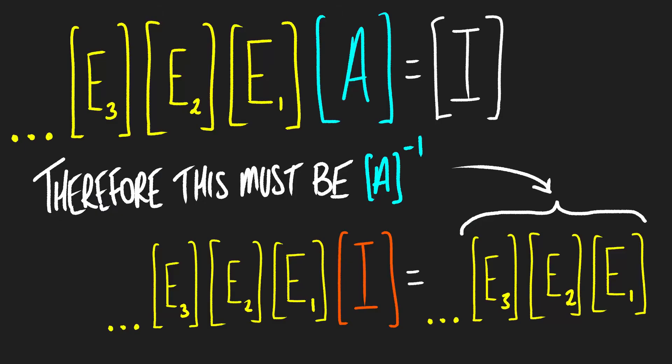The thing to notice is that all of these elementary matrices we multiplied the identity matrix by are the exact same group that we multiplied matrix A by to get the identity matrix. And that is the exact definition of what an inverse matrix is: if you pre-multiply or post-multiply a matrix by another matrix to get the identity matrix, then that matrix is the inverse. So this group of elementary matrices, when multiplied together, is our inverse matrix. That's why the Gauss-Jordan method works when finding the inverse of a matrix.